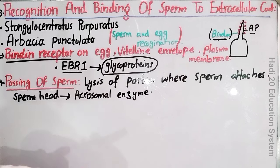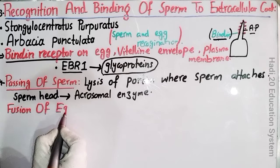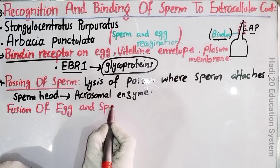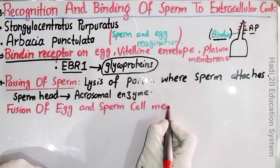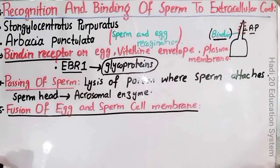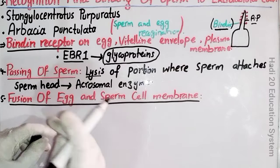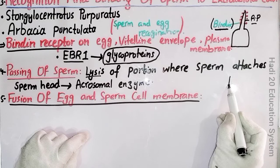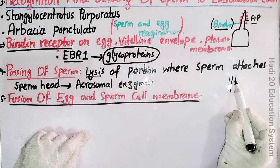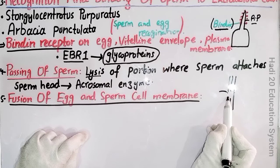اب ہم بات کرتے ہیں point number five — fusion of egg and sperm cell membrane۔ یہ آخری step ہے کہ کس طرح سے sperm اور egg کی cell membranes آپس میں مل جاتی ہیں۔ Dear friends، جو outer coat ہے وہ ٹوٹ چکا ہے۔ جیسے outer coat ٹوٹے گا، جو sperm اور egg ہیں ان کی plasma membrane مل جائیں گی۔ یعنی کہ jelly layer کے باہر والی side سے sperm آتا ہے، اور jelly layer کے اندر والی side پر plasma membrane موجود ہے۔ جیسے jelly layer ٹوٹی، وہاں پر sperm attach ہو گیا تھا۔